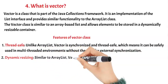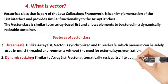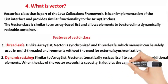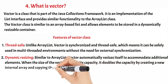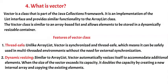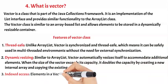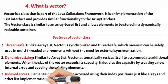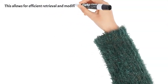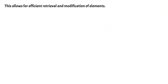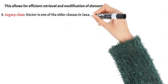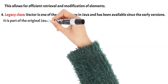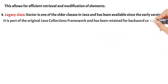Key feature 2: Dynamic Resizing — Similar to ArrayList, Vector automatically resizes itself to accommodate additional elements. When the size of the vector exceeds its capacity, it doubles the capacity by creating a new internal array and copying the existing elements. Key feature 3: Indexed Access — Elements in a Vector can be accessed using their index positions, just like arrays and other list implementations, allowing for efficient retrieval and modification. Key feature 4: Legacy Class — Vector is one of the older classes in Java and has been available since the early versions. It is part of the original Java Collections Framework and has been retained for backward compatibility.